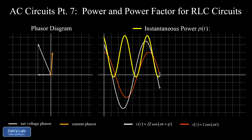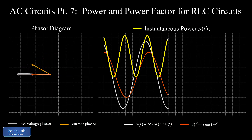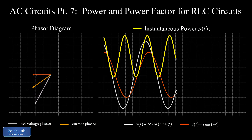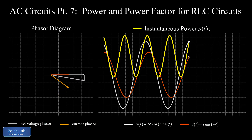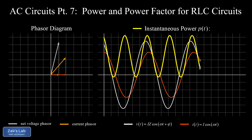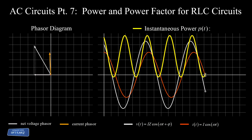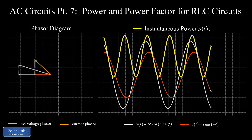On the left side of the animation we have the current and voltage phasors for the RLC series circuit, and on the right we see how the instantaneous power function results from the product of the current and voltage functions. One interesting feature of this power function is that it oscillates twice as fast as the original sinusoidal functions.